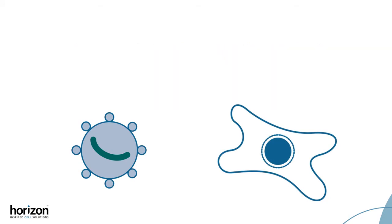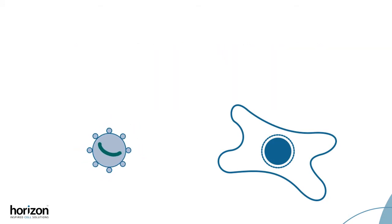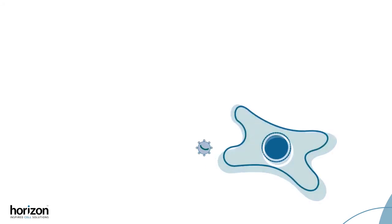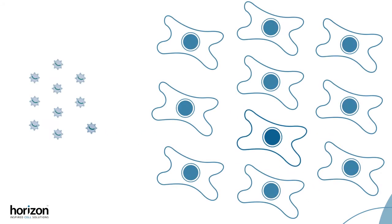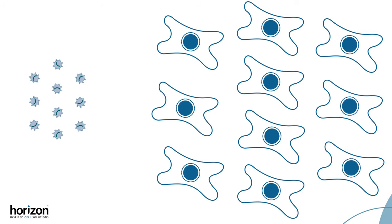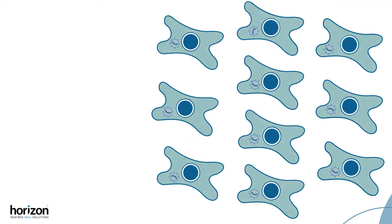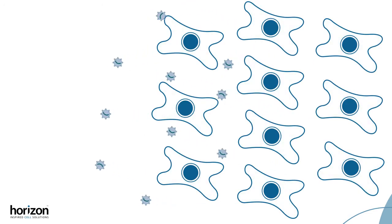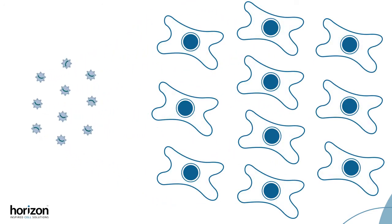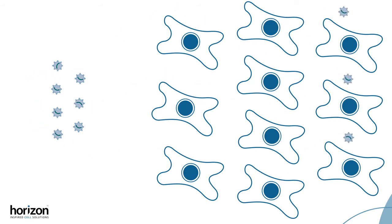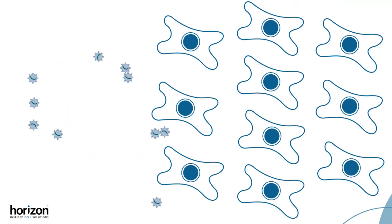In ideal circumstances, if you had an MOI of one, then you have one viral particle going into one cell. However, this is rarely the case. Imagine you have 10 cells and 10 viral particles in an experiment. Theoretically, there is one viral particle for each cell, but this one-to-one ratio does not automatically happen. Viral particles may move around the cell, or more than one may go into a cell.